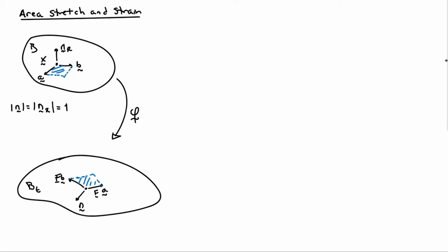The basic setup is quite similar to what we have before. We start with a body B and it's deformed with the deformation map phi into a body BT. We're going to consider points big X and we'll look at a little area element near big X defined by two vectors a and b. We'll consider the parallelogram bounded by a and b, and that will define a small area. The normal vector to that area we'll call nr, where the norm of nr is equal to 1.